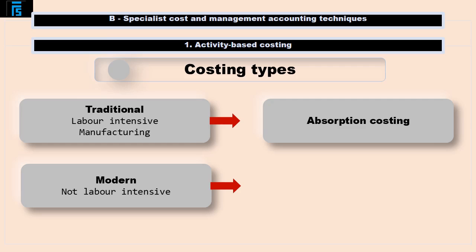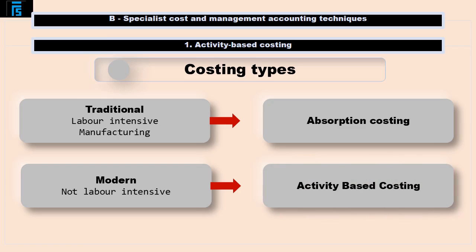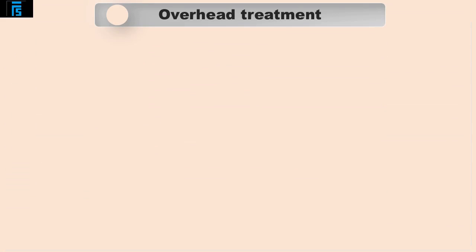Activity based costing is an alternative to absorption costing. It recognises that today manufacturing is no longer labour intensive, and looks for new ways to trace overheads to products. Before delving into activity based costing in more detail, it is important to put this treatment of overheads into some context in terms of how they were traditionally treated under absorption costing.